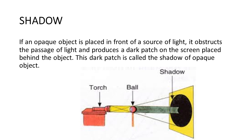So, that portion of screen does not receive any light and remains dark. This dark portion is the shadow of the object as you can see in the figure. An opaque material on which the shadow is formed is known as a screen.